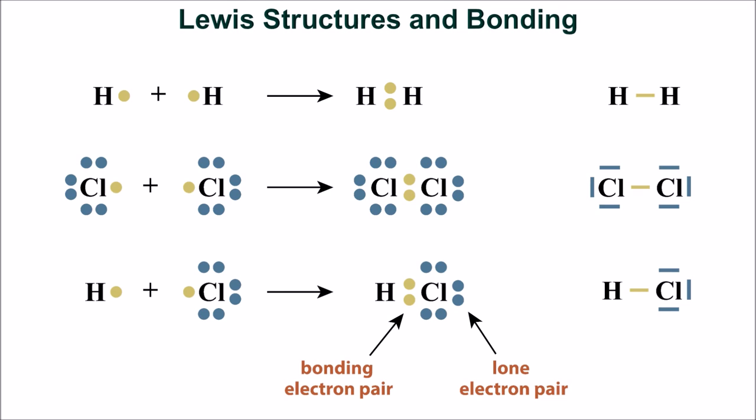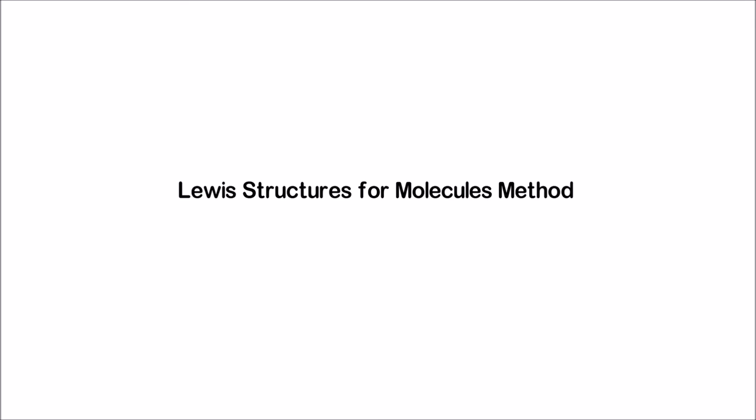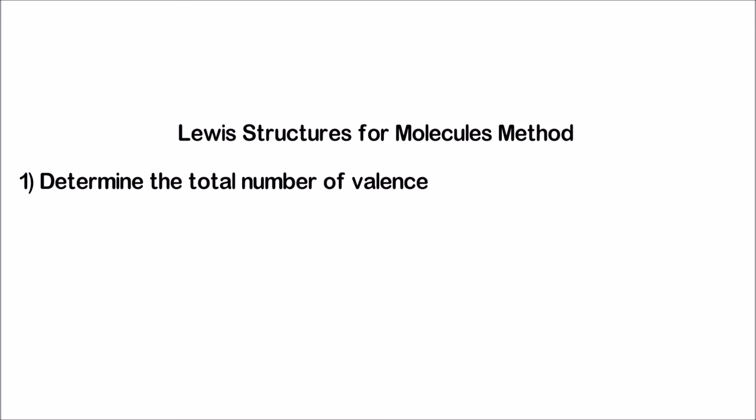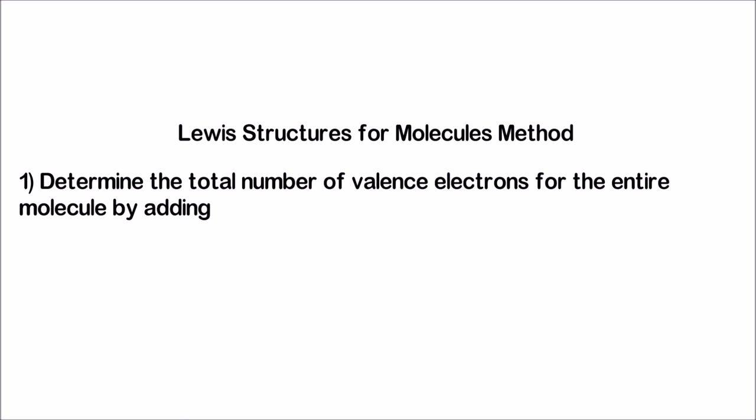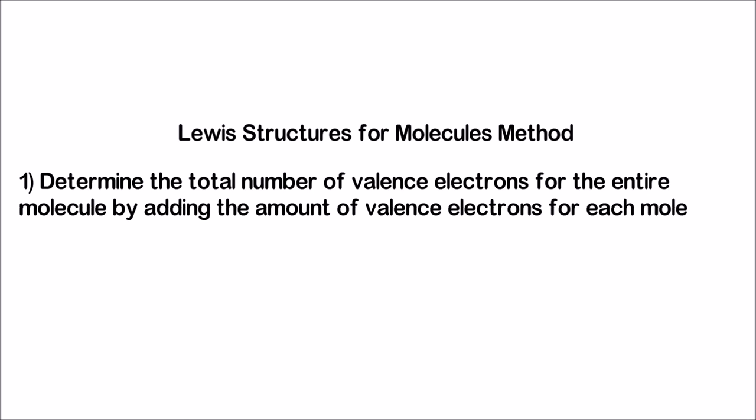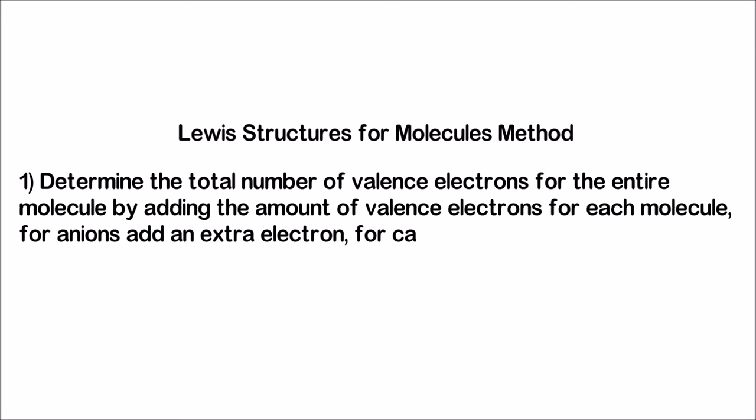The last portion of this video is dedicated to drawing Lewis structures, which we use to demonstrate bonding between atoms. You can see in this figure how the filling of valence shells by bonded atoms is displayed using Lewis structures. There are detailed example videos on drawing Lewis structures to watch after this. The basic method begins with Step 1: determine the total number of valence electrons for the entire molecule by adding the valence electrons for each atom. For anions, add an extra electron; for cations, subtract an electron.